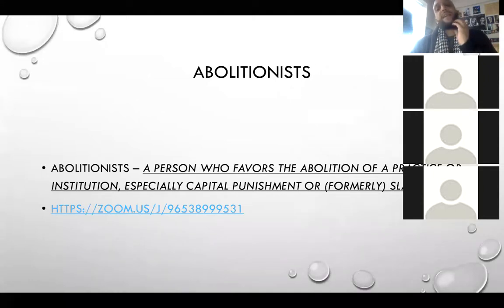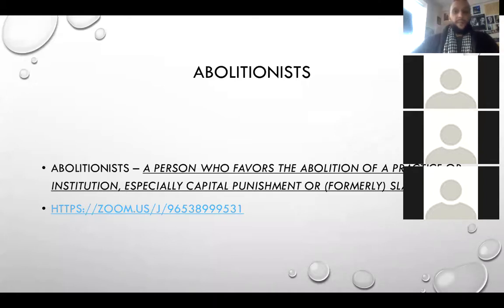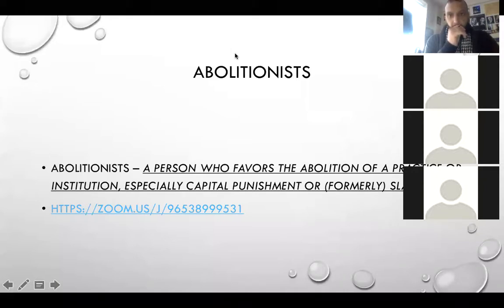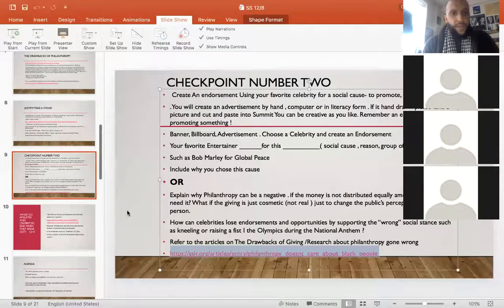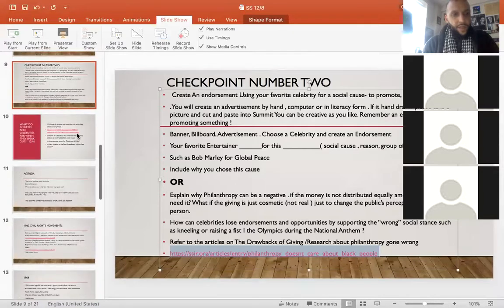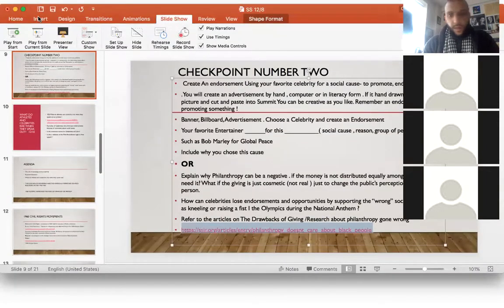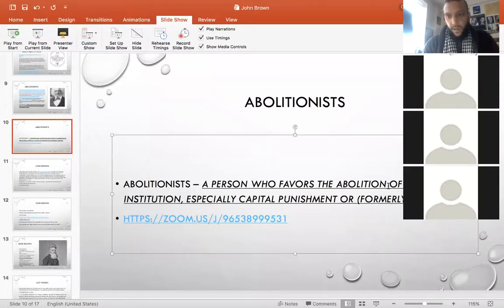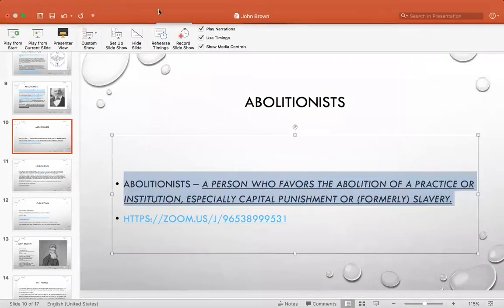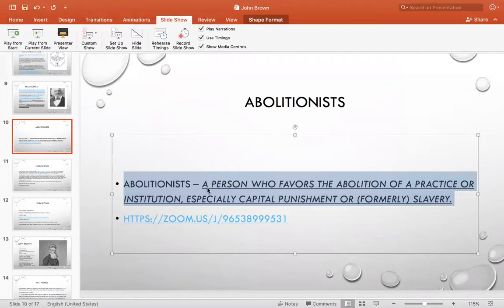Let me know when you're done writing that down. Zaire, you got the definition? I'm also going to put it in the checkpoint and in the chat. Inside the chat right now I put the definition, so in case you don't have it you can go ahead and write it down. So let's look at a few-minute video on abolitionists before we go into Frederick Douglass. We know mostly about John Brown.